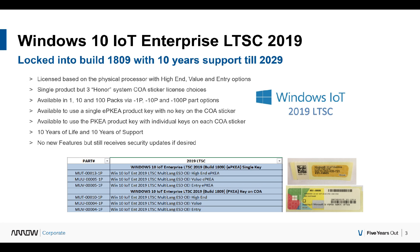What is Windows 10 IoT Enterprise LTSC 2019? It is full-blown Windows 10 Enterprise — the word 'IoT' won't actually be in the product anywhere; that's just the channel it falls in. It is full Windows 10 Enterprise on the long-term service channel, locked into build 1809 — which is the year and month September 2018 that it launched, though they still call it the 2019 edition. You get 10 years of life and 10 years of support, perfect for your appliance.